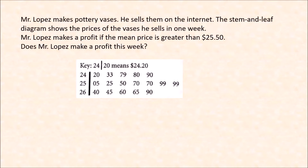Mr. Lopez makes pottery vases and sells them on the internet. This stem-and-leaf diagram shows the prices of the vases he sells in one week. Mr. Lopez makes a profit if the mean price is greater than $25.50. Does Mr. Lopez make a profit this week? We want to find the mean, because to know if he's making a profit, we need to show that the mean price is greater than $25.50. Recall that to find the mean, you have to add all the data points and divide by how many data points there are.